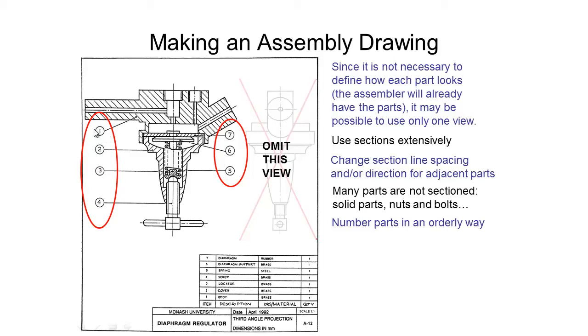So we have our number and we enclose it in a circle. We then have a leader that comes out to the part and it is normally terminated with a dot or an arrow. So you generally choose to use a dot or an arrow and not use a mix of both of those.